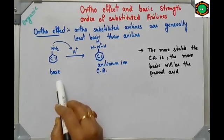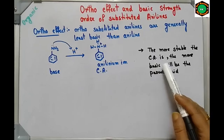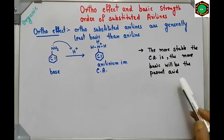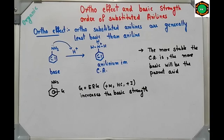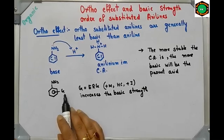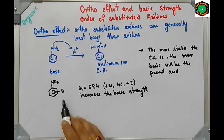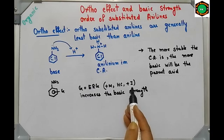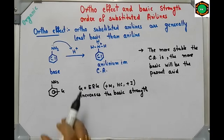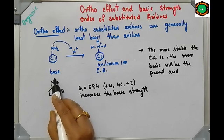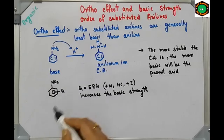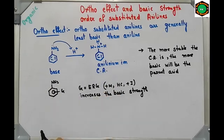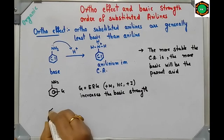Remember: if the conjugate acid is more stable, then the parent base is more basic. Now in aniline, if any electron-releasing group is present in a substituted aniline, it will supply electron density by +M effect, hyperconjugative effect, or +I effect. This increases electron density on nitrogen, so availability of electrons for donation increases, which increases basic strength.